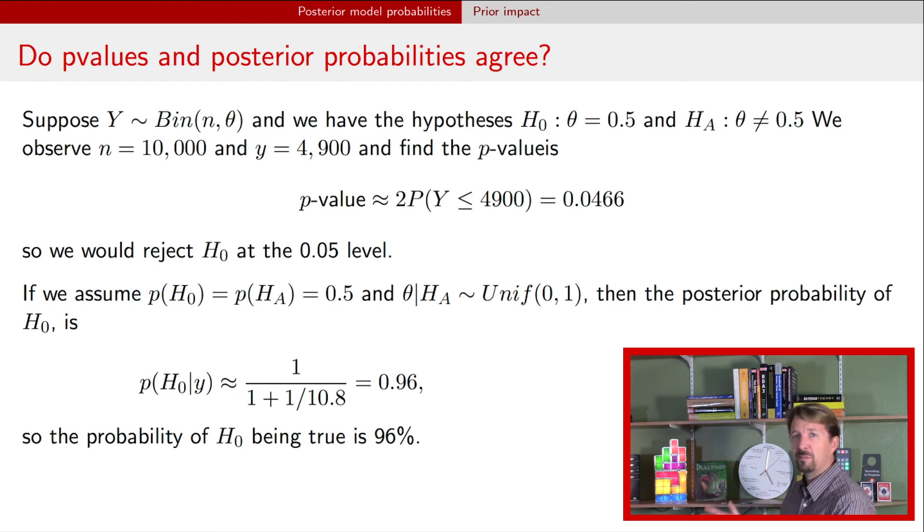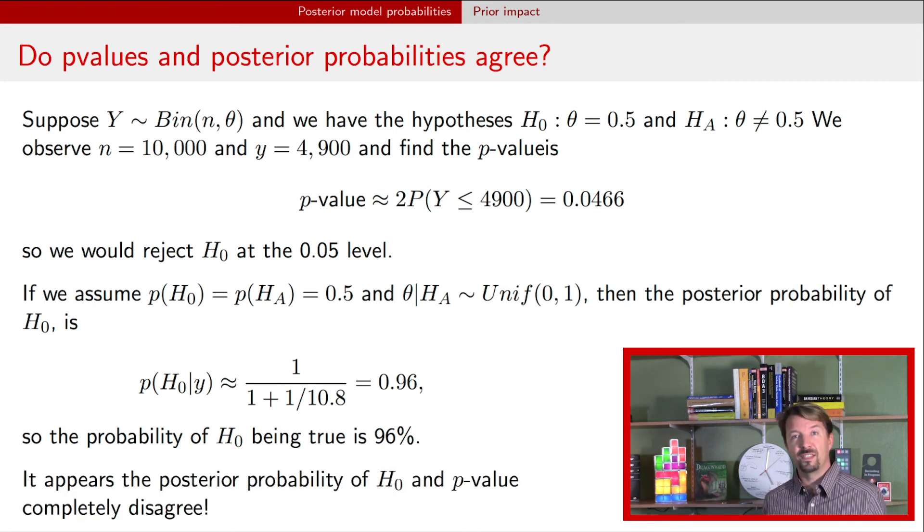And so this seems to suggest that at least in some situations, the p-values and the posterior models completely disagree. That is, if you were making decisions based on these two statistics, you would come to completely different decisions.